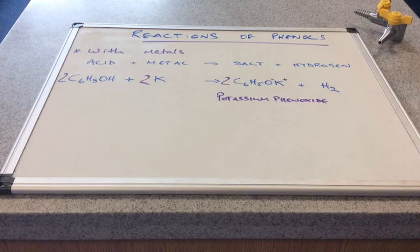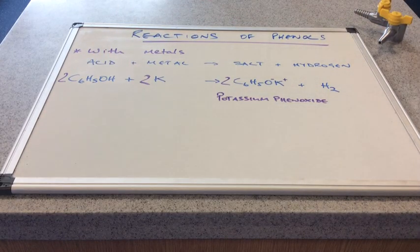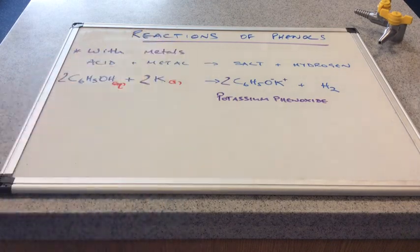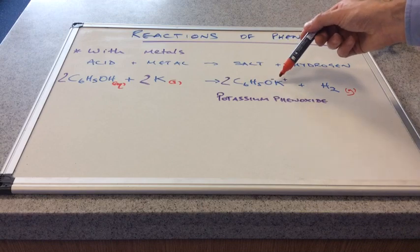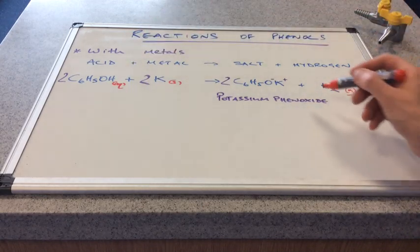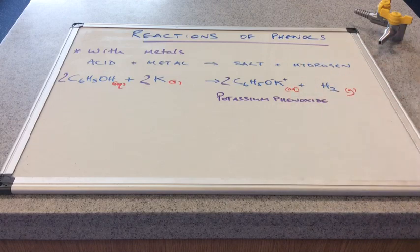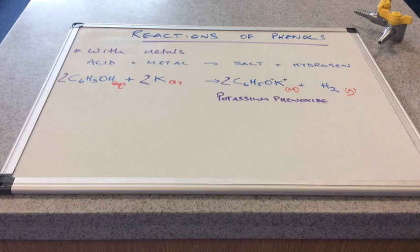Now we'll better look at some observations that are associated with this reaction. Imagine this was an aqueous solution of phenol. And obviously the potassium is a metal, a solid. So we've put the state symbols, aqueous, solid. Obviously hydrogen is a gas. Now this is an ionic substance. So it's going to dissolve in the water present. So we're going to get an aqueous salt as well. So observations wise, you can see that our solid has dissolved. And obviously you're also going to see bubbles of gas produced. Or if you want to show off with your vocabulary, you could say effervescence occurs.